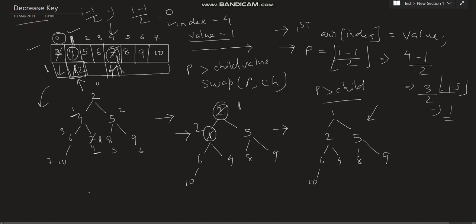The modified array after performing the decrease key operation is: 1, 2, 5, 6, 4, 8, 9, and 10. This is the modified array. This concept is known as decrease key.